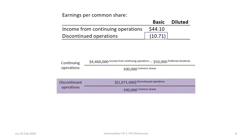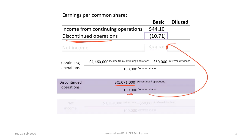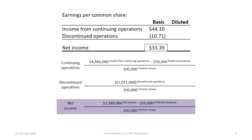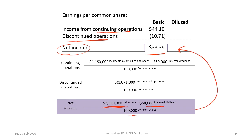The next calculation of basic EPS is on the discontinued operations. The deal resulted in a reduction of EPS because the loss on disposal of the services division exceeded the income generated from the operation of the division until disposal. Recall from the income statement, the loss on discontinued operations net of tax was $1,071,000, divided by 100,000 common shares, giving us a loss per common share of $10.71. Taking the EPS on continuing operations and subtracting the EPS on discontinued operations — $44.10 less $10.71 — gives us earnings per share on net income of $33.39.